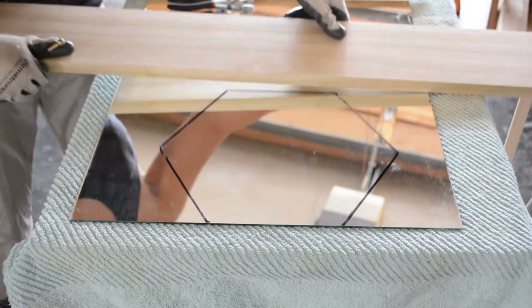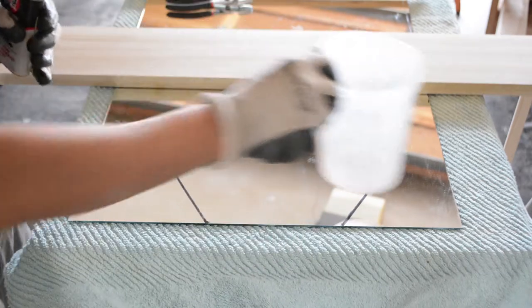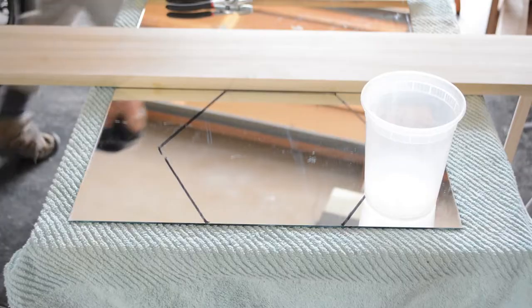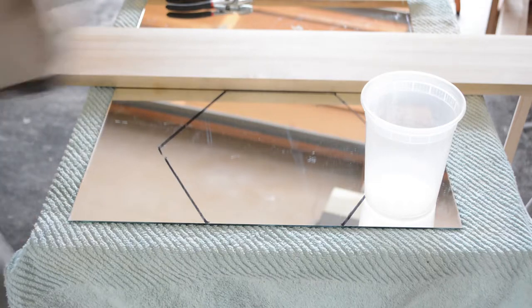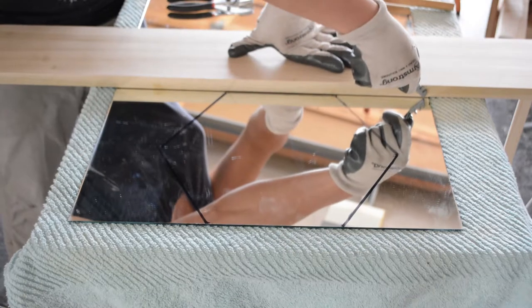To cut the mirror you're going to need a straight edge that doesn't slip, some lubricating oil, a glass cutting tool that you can buy for five dollars, gloves, eye protection, a wooden dowel and an accessible trash can. I start by dipping the tool into the oil, lining up the straight edge and scoring both ends first.